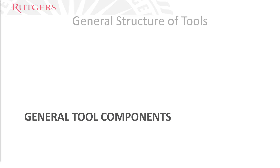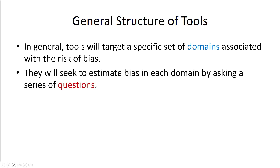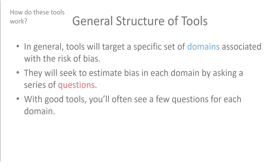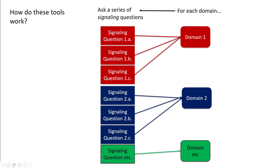What are some general tool components? In general, tools will target a specific set of domains associated with risk of bias. They seek to estimate bias in each domain by asking a series of questions — with good tools, you'll often see a few questions for each domain. Think of these as different domains of validity: selection bias, detection bias, etc. A tool will typically include several questions for each domain, called signaling questions. By answering the signaling questions, this leads you to a transparent and principled decision about whether risk of bias is present in a particular domain.